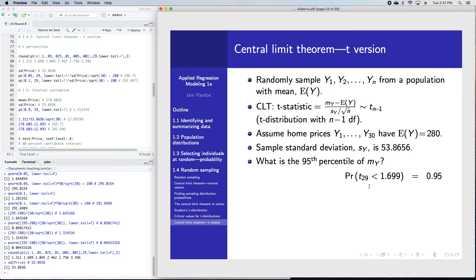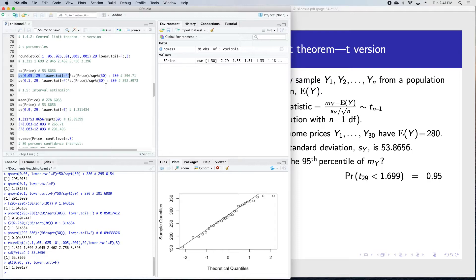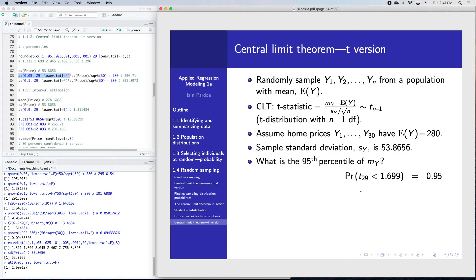I start with the t-distribution expression. Probability t29 less than 1.699 is 0.95. The 1.699 is this number here. The 95th percentile of a t-distribution with 29 degrees of freedom.